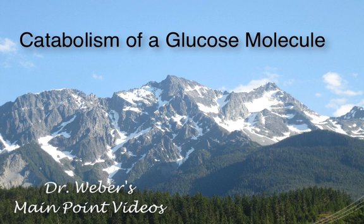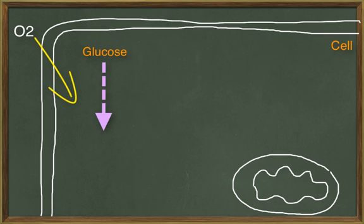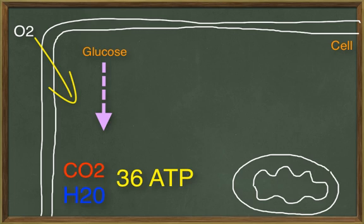Catabolism of a glucose molecule. Most cells generate ATP by breaking down carbohydrates, especially glucose. When cells consume oxygen, they can break down glucose into carbon dioxide and water, providing a typical body cell with 36 molecules of ATP. The breakdown of glucose takes place in a series of small steps.